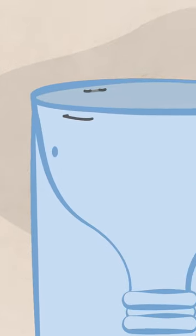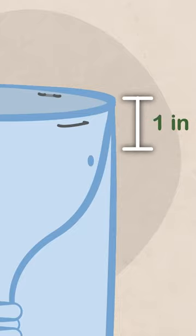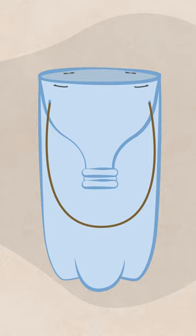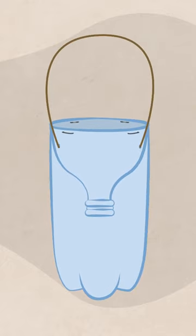Drill two holes on opposite sides of the bottle about one inch, 2.5 centimeters, below the top edge. Then thread a cord through them and knot it on both sides to make a handle so you can hang the trap.